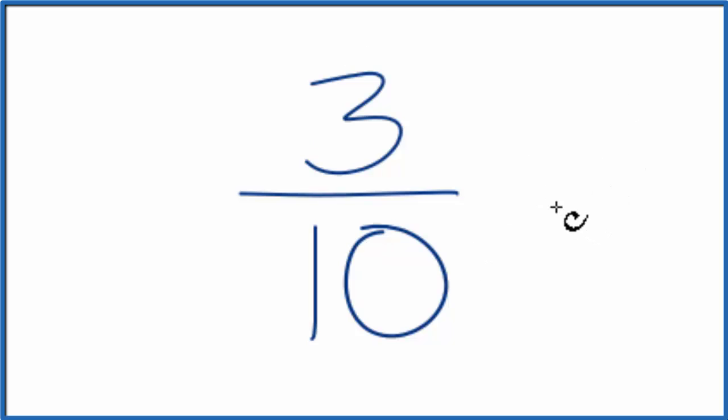So I'm trying to find a factor that goes into both 3 and 10. So 3 would go into 3, but it doesn't go into 10. Two goes into 10, but it doesn't go into 3. So there's really no common factor other than 1 that divides evenly into both 3 and 10.